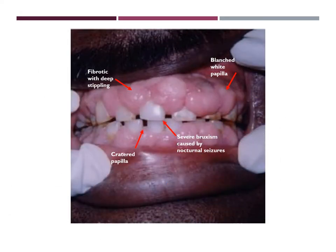In this other gingival image, you can clearly see a texture that is fibrotic with deep stippling as well as cratered papilla. You can also see the effects of Dilantin, which is the blanching of the papilla. Some epileptic patients experience nocturnal seizures, which causes severe bruxism and can overall cause wearing down of the enamel and tooth structures.